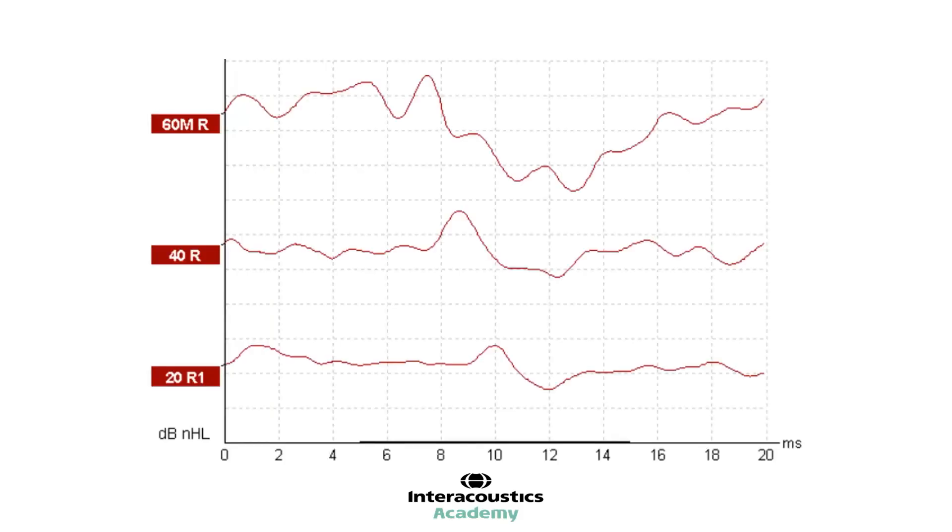In the example on screen, we have three different intensity levels for the same stimulus. In this instance, the waveforms recorded are good quality, with minimal noise and no baseline drift, making it easy to identify wave 5. At the level of 60, we can see wave 5 is present at just before 8 milliseconds.